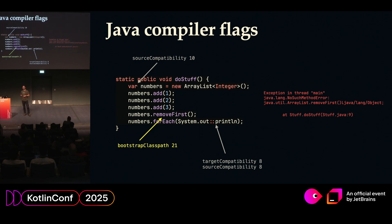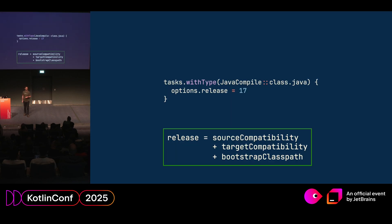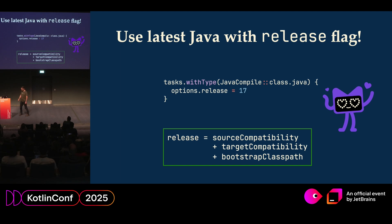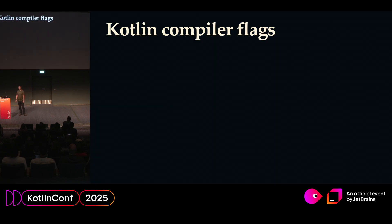It's a lot to remember: source compatibility, target compatibility, bootstrap classpath. So the good Java folks introduced the --release flag in Java 9, and it does all of that all at once. So you should use it. This is the second recommendation: if you are targeting Java, always use the release flag.